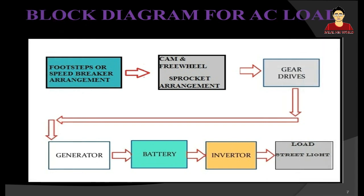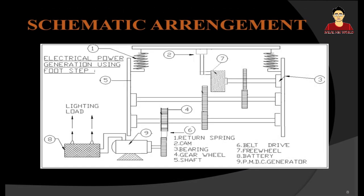For AC load, the block diagram is: footstep or speed breaker arrangement, cam and freewheel sprocket arrangement, gear drives, generator, battery, and then an inverter for using AC load. In this system, there are nine main parts: return spring, cam, bearing, gear wheel, shaft, belt drive, freewheel, battery, and permanent magnet.